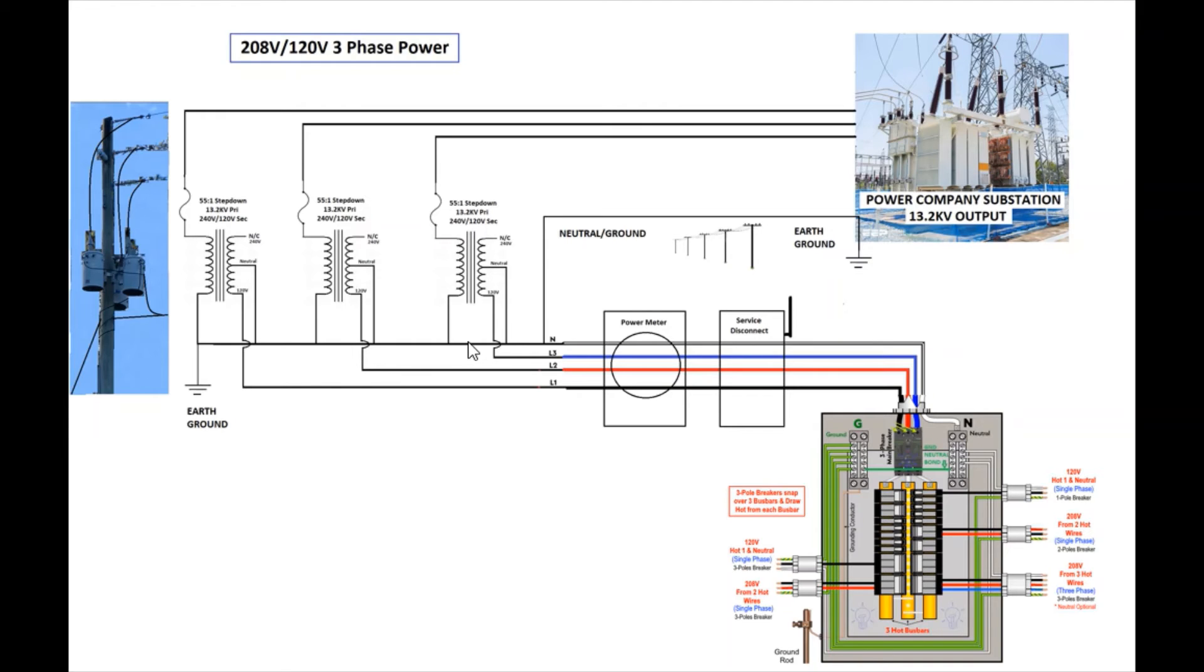So that tenth of an amp that's going through your primary here on the transformer, that's the only amount of current that needs to make it all the way back to the power substation, either through the neutral wire, through all the different ground connections all the way along, however it got there the easiest. That's the only current that would need to be returned back to the substation.